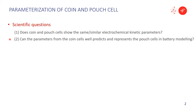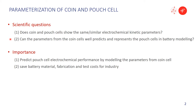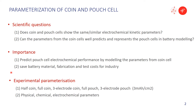If so, the parameters from the coin cell could predict the pouch cell in better modeling. If the answer is yes, there are two benefits. The first one is we could predict pouch cell yield per month by modeling the parameters from the coin cell. In this way, we can save the cost on battery materials, battery fabrication, and battery tests.